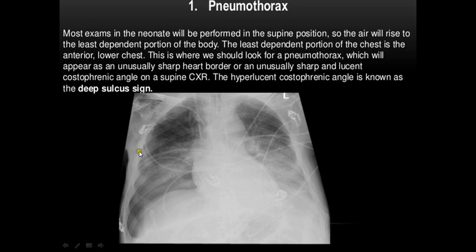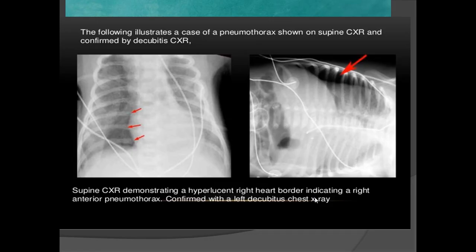Coming to chest emergencies: pneumothorax is the most important emergency routinely encountered. Here, the deep sulcus sign is evident — comparing left and right, the costophrenic angle on the right extends lower than on the left. This is pathognomonic for pneumothorax. In a supine patient, free air accumulates along the cardiophrenic angle, displacing the lung laterally while air collects medially.